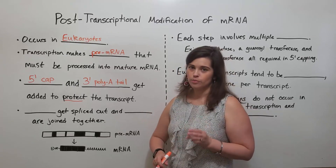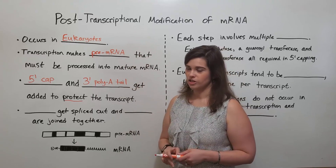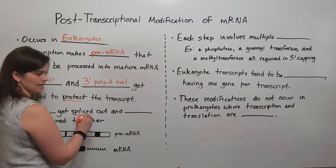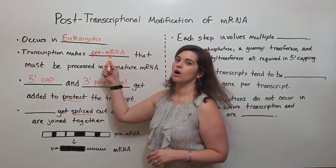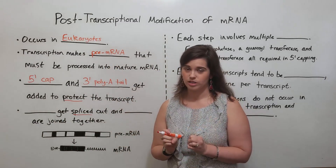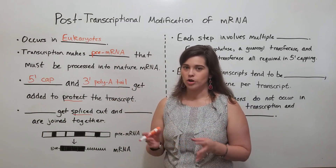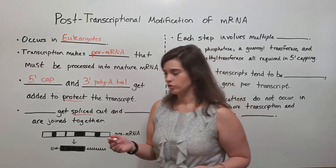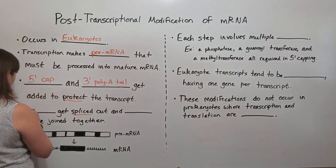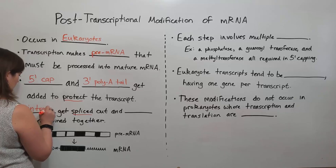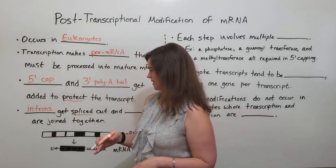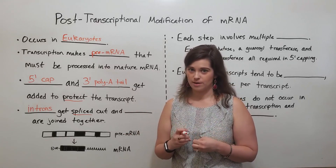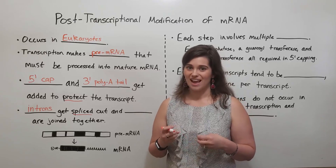There is a third process important in post-transcriptional modification, and that is called splicing. Part of the pre-mRNA transcript gets spliced out. The parts that get spliced out are non-coding parts, meaning they don't code for protein, and they are called introns. So introns get spliced out. The parts that are kept in the final mature mRNA transcript are called exons.